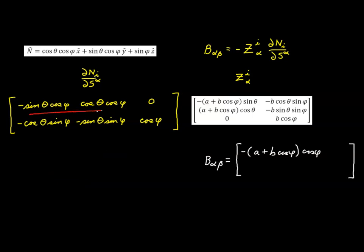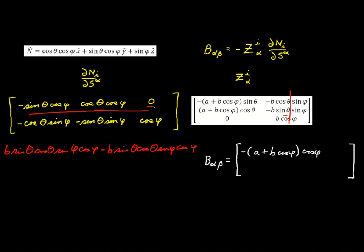The second element, row 1 column 2, is the product of this row and the second column. The first term is positive b sine theta cosine theta sine phi cosine phi, and the second term is negative b sine theta cosine theta sine phi cosine phi, with the third element being zero. These terms are equal but opposite, so they add to zero. Row 1, column 2 is simply zero.